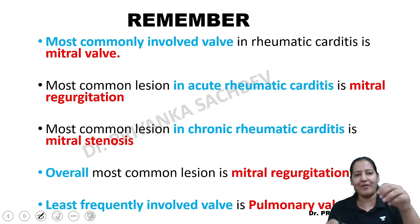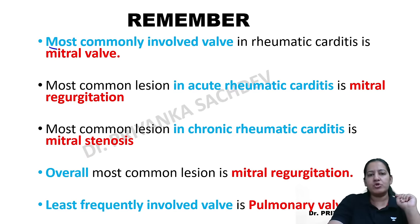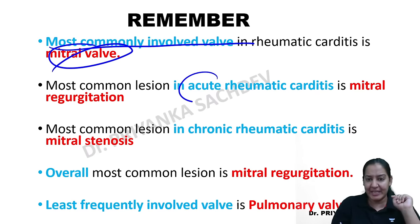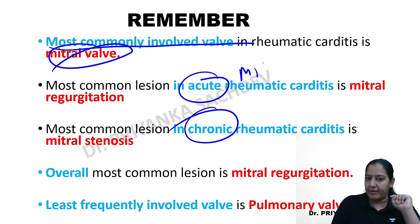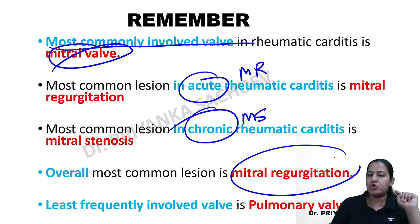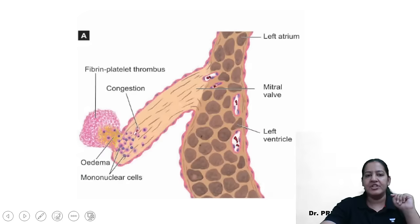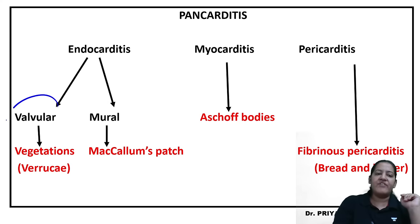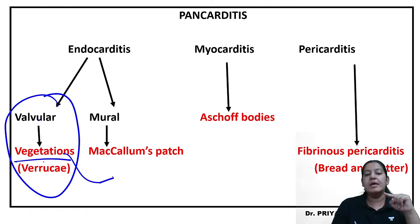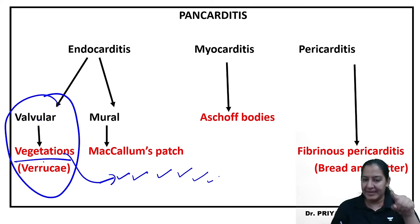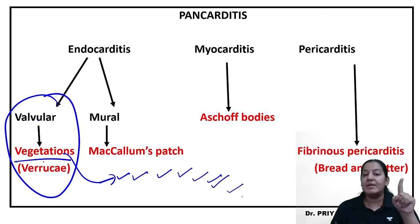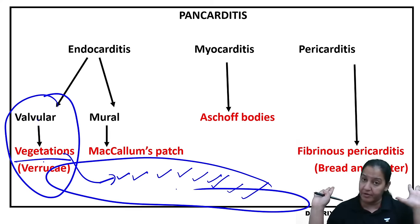Summary of valvular endocarditis: most common valve is mitral; MATP is the mnemonic; vegetations are small, multiple, sterile, soft to firm; they are located at the line of junction causing fish mouth or buttonhole deformity; most common abnormality in the mitral valve is MR. We are now done with valvular endocarditis. Next is mural endocarditis.